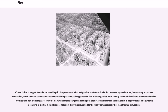Without gravity, a fire rapidly surrounds itself with its own combustion products and non-oxidizing gases from the air, which exclude oxygen and extinguish the fire. Because of this, the risk of fire in a spacecraft is small when it is coasting in inertial flight. This does not apply if oxygen is supplied to the fire by some process other than thermal convection.